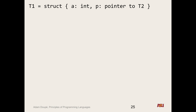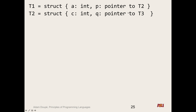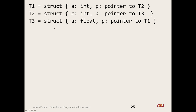Let's go through an example using that logjam case. T1 is a structure with field a as int and field p as a pointer to T2. T2 is a structure with field c as int and field q as a pointer to T3. T3 is a structure with a first field as float and second field p as a pointer to T1. The question is: are these structurally equivalent? It's not immediately clear, and with more types it gets even more confusing — which is why we have this algorithm. We have three types, so we build a three-by-three table.